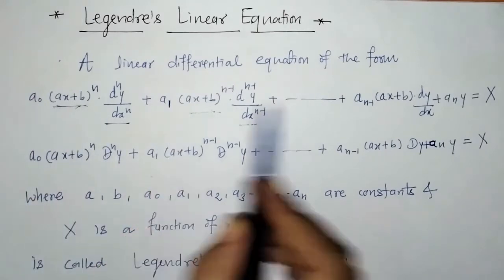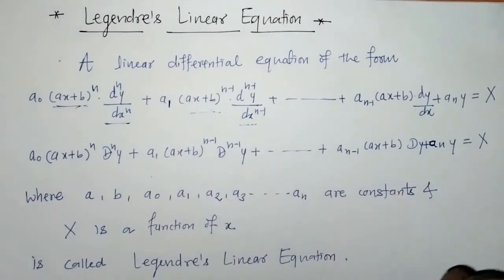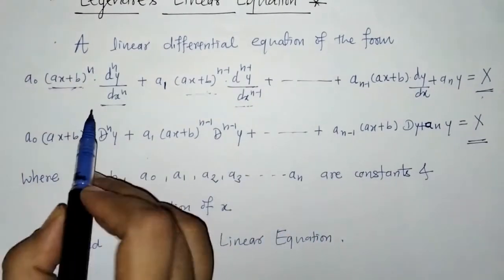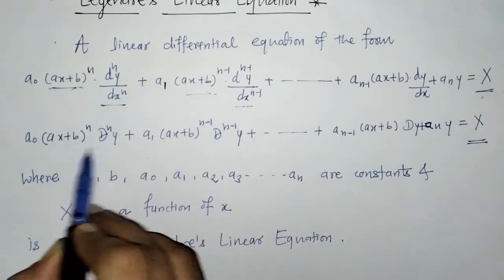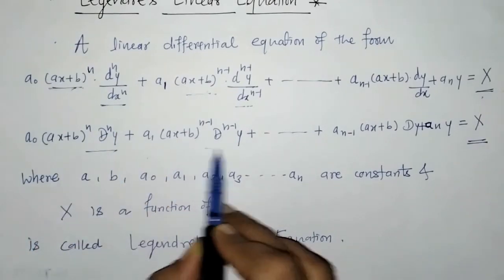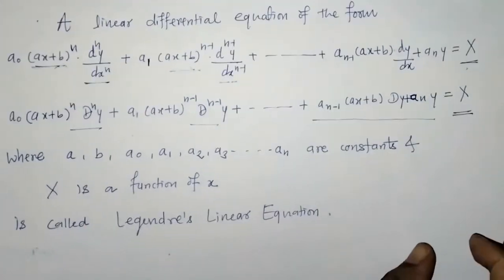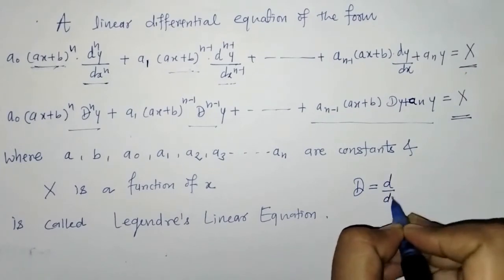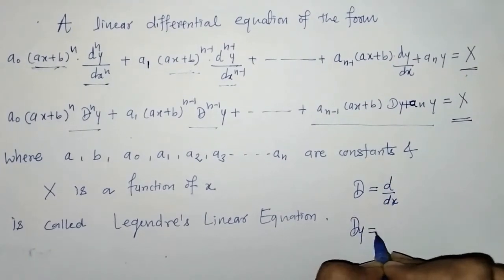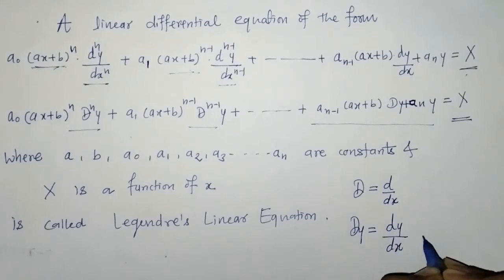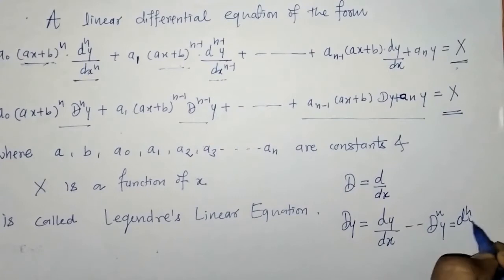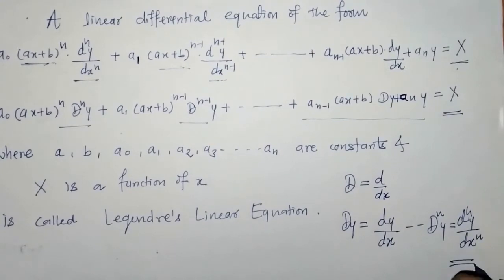Here a₀, a₁ up to aₙ are constants, and x is the variable. We can write this differential equation in operator form, where D denotes d/dx. That means Dy equals dy/dx, and Dⁿy equals the nth derivative of y with respect to x.